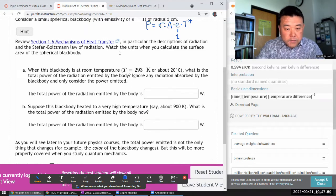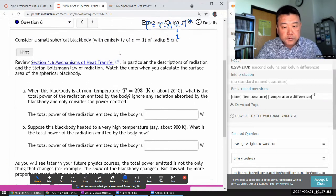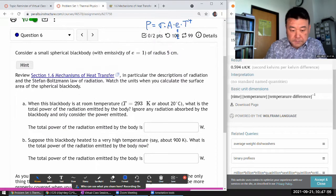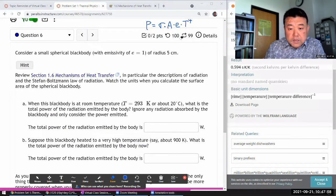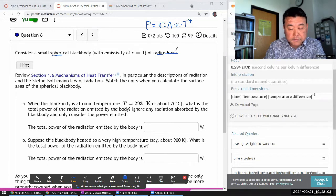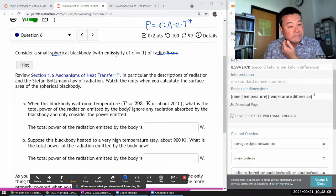Okay, so I think the one thing you have to know is you have to know the area of the sphere. Because it's telling you that it's a small spherical body of some radius, five centimeters. And you just have to know that the surface area of a sphere is given by four pi r squared.